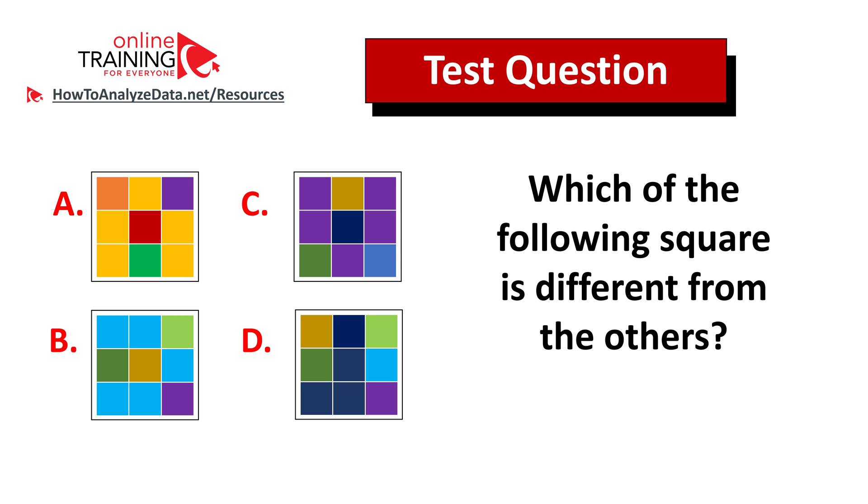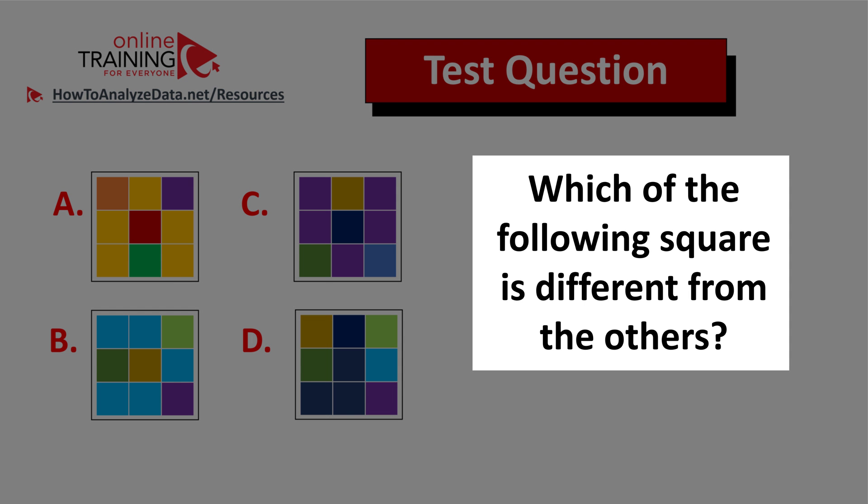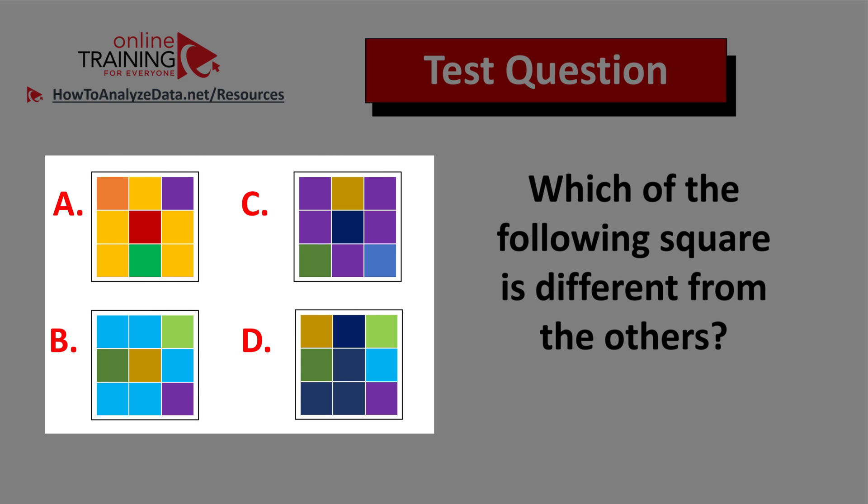Alright, this question is quite tricky, but regardless of whether you can solve it or not, once I show you the solution I'm pretty sure you will be excited. Which of the following squares is different from the others? You're presented with four different choices. Each square contains nine small squares inside - choices A, B, C, and D.